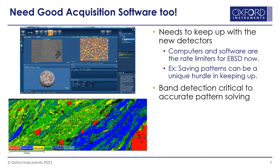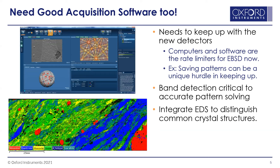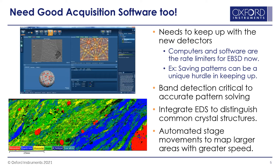Other things we have to think about are band detection — it's critical to accurate pattern solving. TKD involved a whole different approach to band detection alone. We also want to avoid problems with EBSD: common crystal structures where EDS can help with distinction, like copper and nickel. Most SEMs have EDS first, EBSD as a second tool, and then we automate the stage to build up large areas. Ultimately, with the acquisition software, what we get is a table of all these numbers, and you need to get to your orientation map.